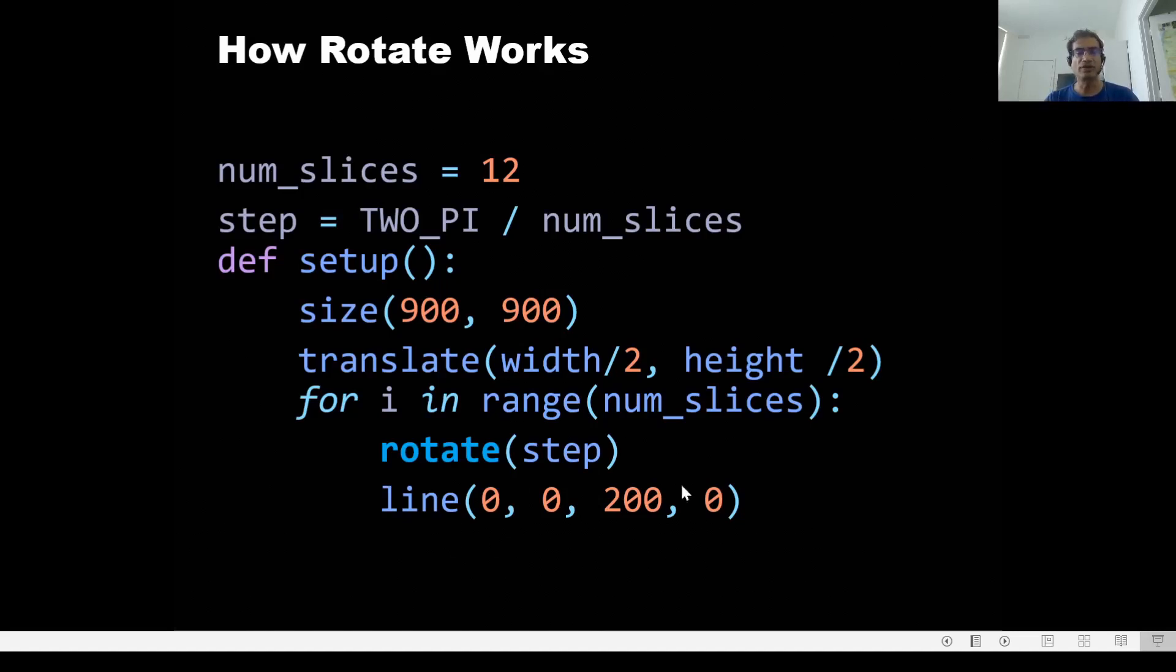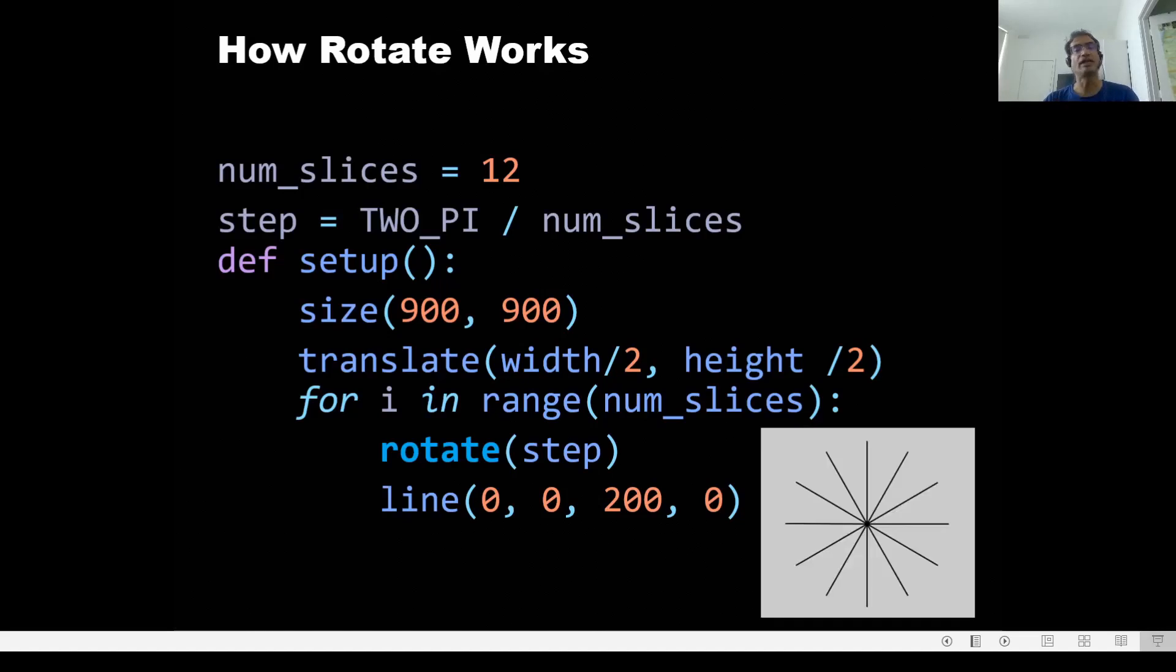Pay attention to where the line is, the line goes from 0, 0 to 200 comma 0. So it looks like I'm drawing the same line over and over again parallel to the x axis. But since the coordinate axis keeps getting turned, this actually will produce an image which will look like this. That's the power of rotate.